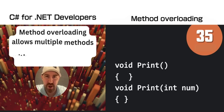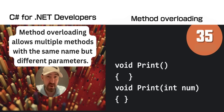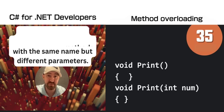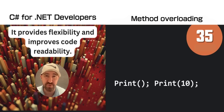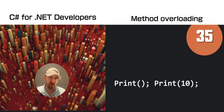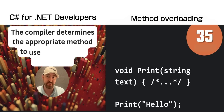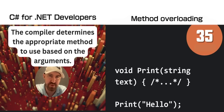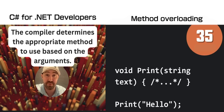Method overloading allows you to have multiple methods with the same name but different parameters. It provides a bit more flexibility and improves readability because you don't need to have lots of nullable parameters. You don't even have to worry about which method is actually used because the compiler handles all of that.